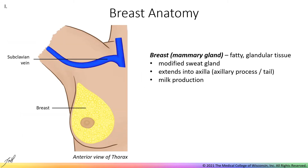The breast is a modified sweat gland on the anterior thoracic wall, composed of a mass of fatty glandular tissue that extends into the axilla or armpit. This is called the axillary tail. Although everyone has breasts, they become more developed in response to certain hormones during puberty or pregnancy, like estrogen, developing glands and ducts capable of milk production during lactation.